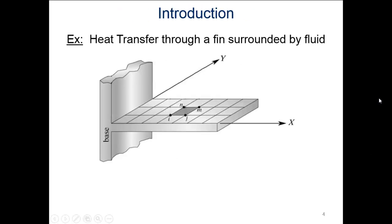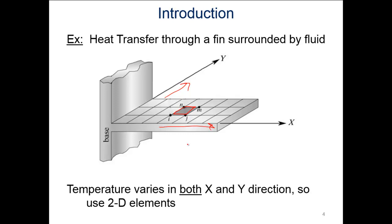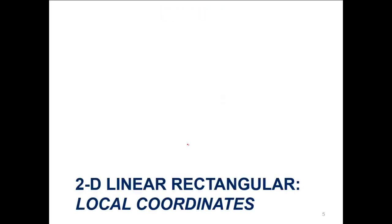For our introduction, we're going to look at heat transfer through a fin, which we've examined in previous presentations. This time, we're specifically looking at heat moving in both the x direction and the y direction — so we have a pin fin with a 2D character to it. The temperature varies in both the x and y directions, which is why we use 2D elements.